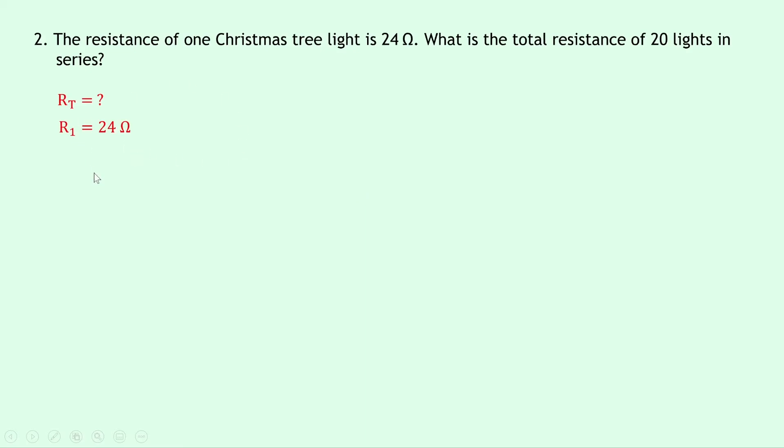We can write down that RT equals R1 plus R2 plus dot dot dot plus R20. And all I've done here to speed it up in the equation is I've ignored R3 up to R19, which is okay. And what we can do is rewrite this as 20 times R1, because we know that R1 is identical to all the other resistors.